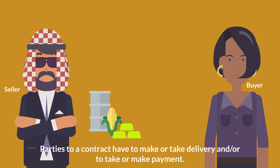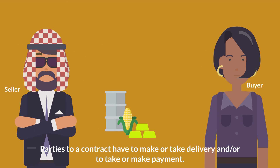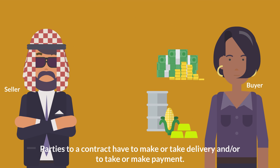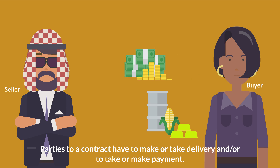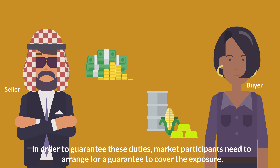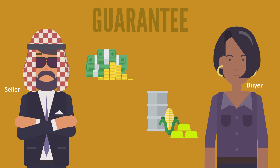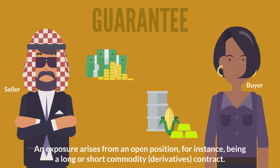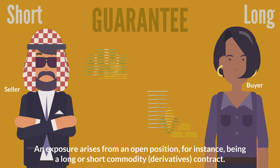Parties to a contract have to make or take delivery and or take or make payment. In order to guarantee these duties, market participants need to arrange for a guarantee to cover the exposure. An exposure arises from an open position, for instance being long or short a commodity derivatives contract.